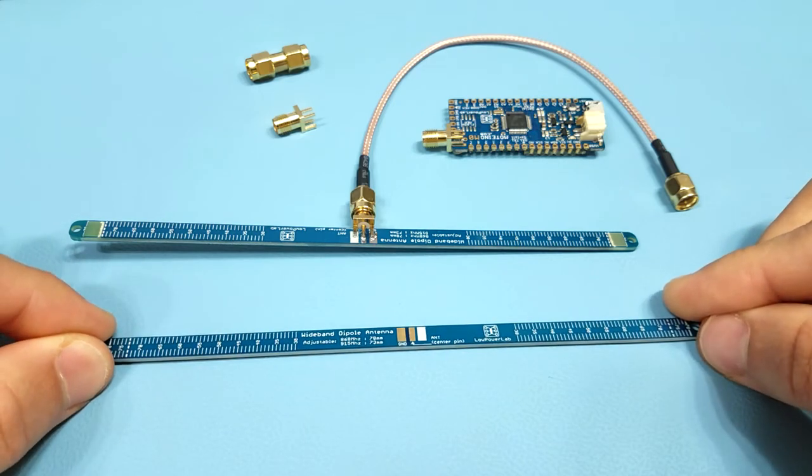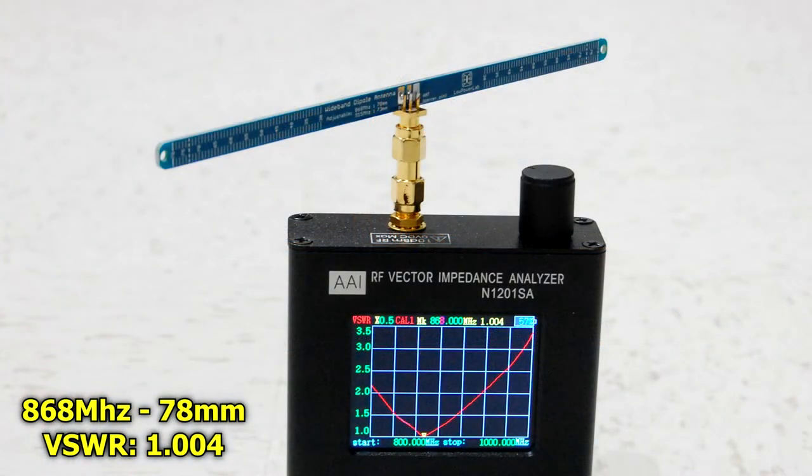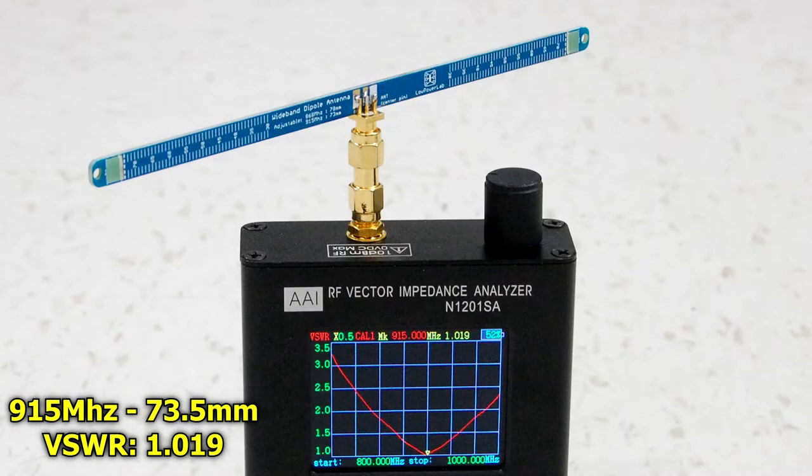I've done some analysis and as you can see this dipole is highly resonant at both 868 megahertz at the original length and 915 megahertz if trimmed down to 73.5 millimeters.